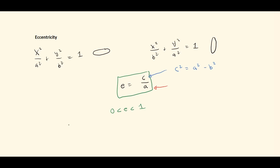If the eccentricity is closer to zero, the ellipse is going to look more and more like a perfect circle. And the closer it is to one, it's going to look more and more stretched out.